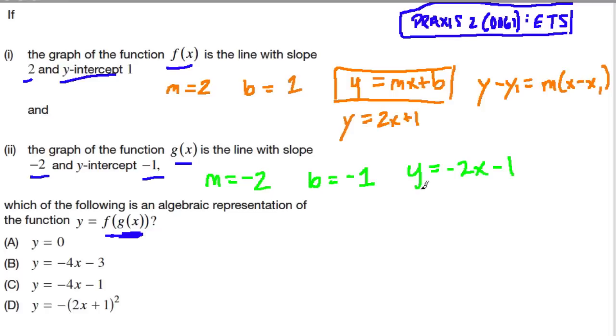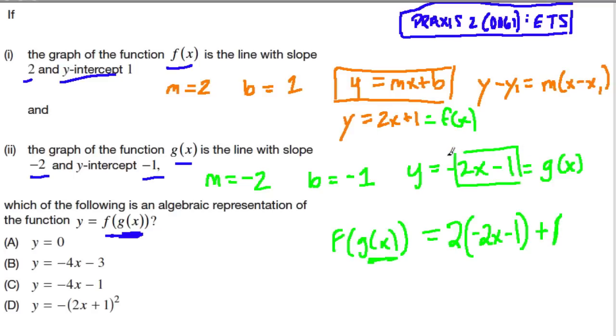And that, it might make more sense to write this equals g of x and this equals f of x. So what's f of g of x? Well, that just means you plug g of x into f of x. So f of x is 2x plus 1, so it's going to be 2 times negative 2x minus 1 plus 1. And all I did there was plug this equation into the x value for f of x.